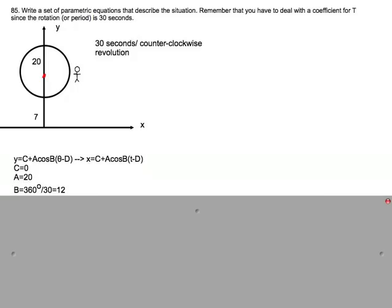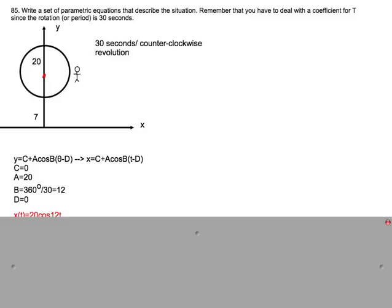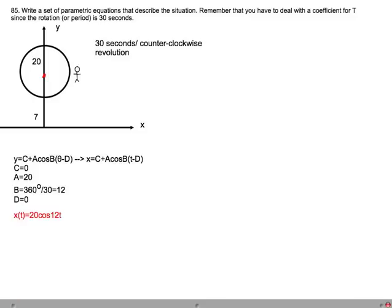The B value is the relationship between the degrees rotated and T the time elapsed in seconds. So in terms of this problem, B would be 360 degrees divided by 30 seconds or 12 degrees per second. And the phase displacement is 0 because we start at a maximum when the time starts at 0.